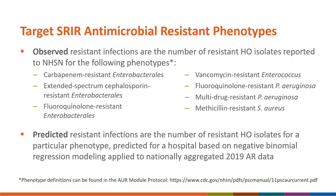The eligible phenotypes include: carbapenem-resistant Enterobacteriales, extended-spectrum cephalosporin-resistant Enterobacteriales, fluoroquinolone-resistant Enterobacteriales, vancomycin-resistant Enterococcus, fluoroquinolone-resistant Pseudomonas aeruginosa, multidrug-resistant Pseudomonas aeruginosa, and methicillin-resistant Staphylococcus aureus. Predicted resistant infections, the denominator of the SRIR, are the number of resistant hospital onset isolates for the same phenotype predicted for a hospital based on negative binomial regression modeling applied to nationally aggregated AR data.